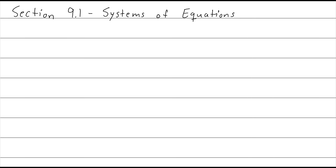We're starting section 9.1, Systems of Equations. Notice that we jumped all the way to section 9.1 — that's because with this book we tend to not go all the way through; we kind of stop around chapter 5 or so. This topic does belong with college algebra, so we need to go over it, although it's not in the same vicinity.